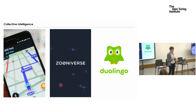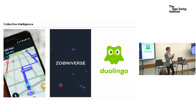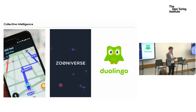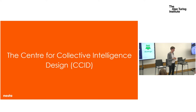The last example is Duolingo, where human and machine intelligence are combined. Duolingo tests out different approaches to learning with different groups of people using the platform, analyzes in the background which approach works best, and then applies that best approach to language learning for all users.